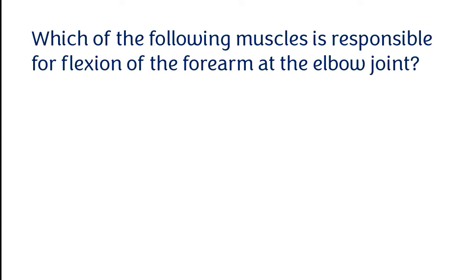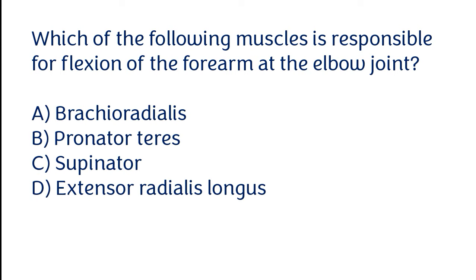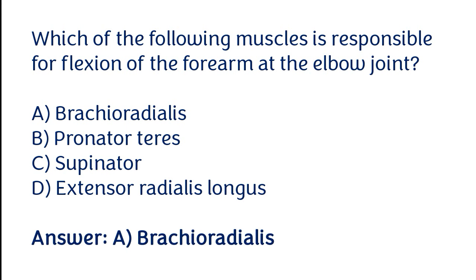Which of the following muscles is responsible for flexion of the forearm at the elbow joint? The correct answer is option A — Brachioradialis muscle is responsible for flexion of the forearm at the elbow joint.